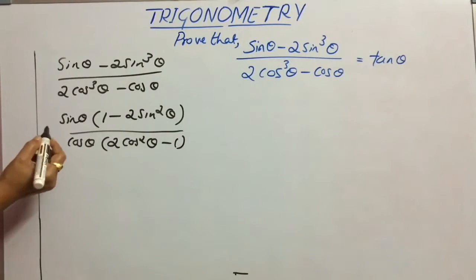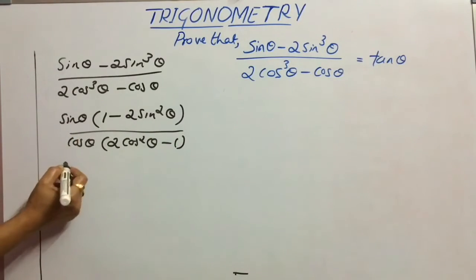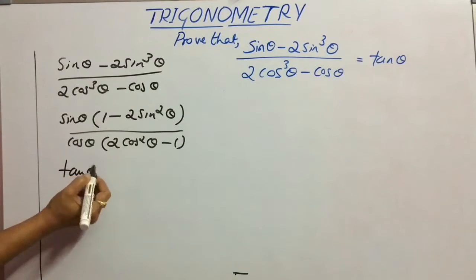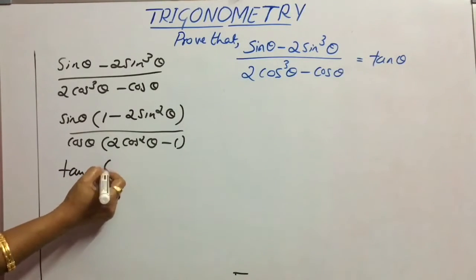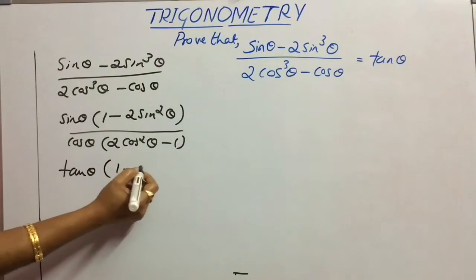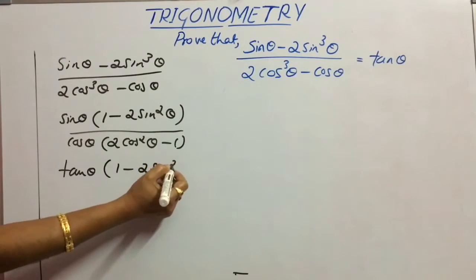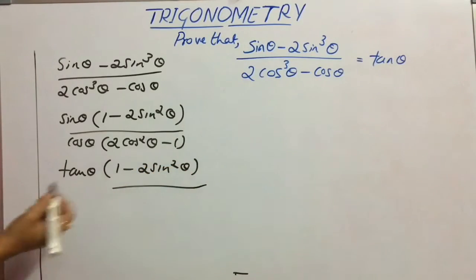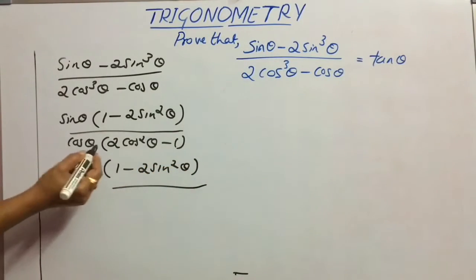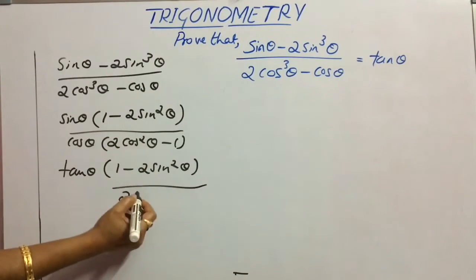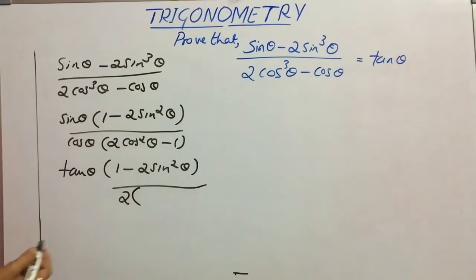Now, we can write sin θ by cos θ as tan θ. In the remaining part, keep 1 - 2sin²θ as it is. In the denominator, we have 2, but replace cos²θ using the identity.